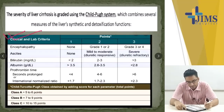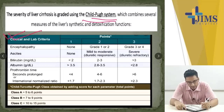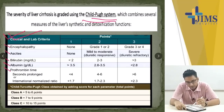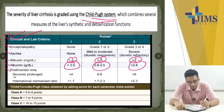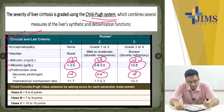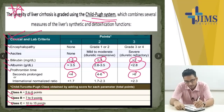The CTP scoring system assigns points for: bilirubin (less than 2, 2–3, more than 3), albumin (more than 3.5, 2.8–3.5, less than 2.8), prothrombin time in seconds or INR (less than 4, 4–6, more than 6), ascites (none, mild to moderate, severe), and encephalopathy (none, grade 1–2, grade 3–4). Child-Turcotte-Pugh class A is 5–6 points, class B is 7–9 points, and class C is 10–15 points. Remember this slide — it's very important for both CLD and hepatocellular carcinoma.